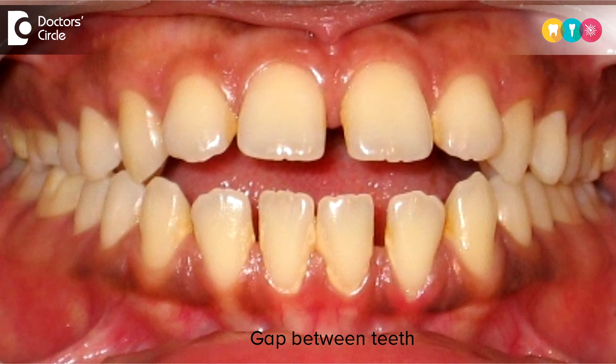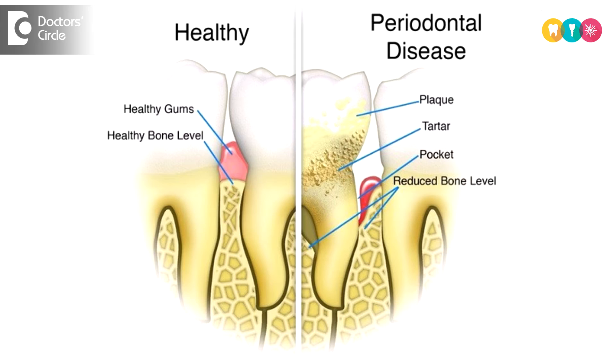Other causes include irregularly arranged teeth, congenital defects in the shape of the teeth, periodontal issues, and removable prosthesis. The patient feels a great amount of discomfort when this happens. Sometimes it is associated with pain, bad breath, and bad taste in the mouth. Hence it is important for us to identify the cause of food impaction and treat it respectively.